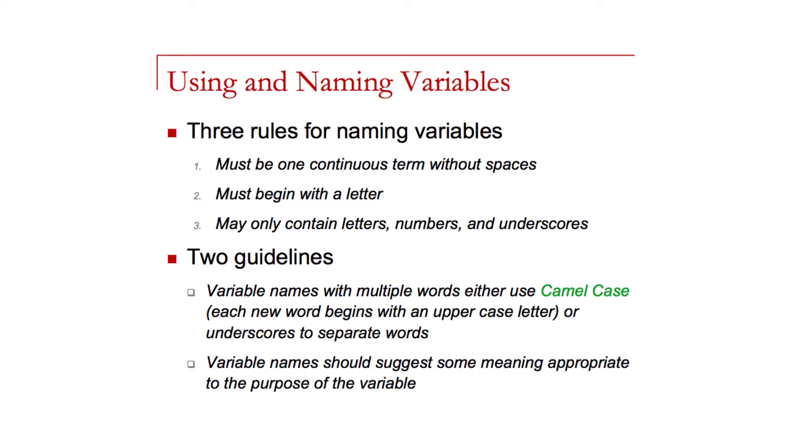There's two suggested guidelines. Sometimes variables may have multiple names. When there's two words representing a single variable, we can't have spaces in the variable names. Something called camel case is a specific naming guideline where we would take the second name and capitalize that letter of that second word. So in variable names that have two words, we would have that second word beginning with an uppercase first letter. And variable names also should suggest some meaning appropriate to the purpose of the variable.